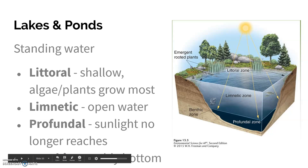Lakes and ponds are the standing water ones. The difference between a stream or river and a pond is basically just size — there's no real hard-line determination of when a lake becomes a pond or vice versa. Just know that they're either standing or moving; there's no specific number to memorize. Lakes and ponds are broken up into distinct regions.